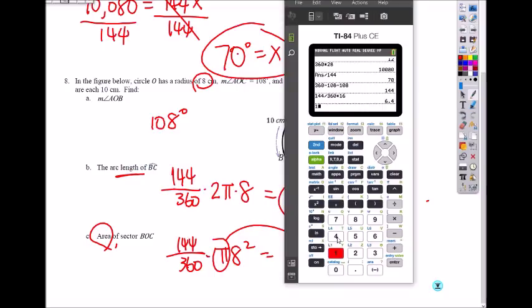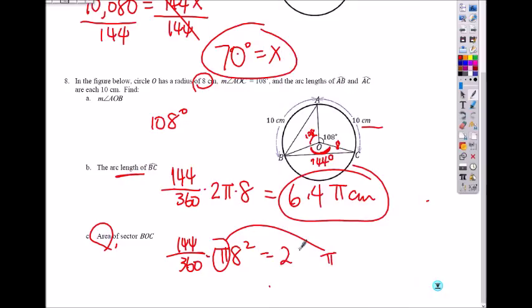It's 144 divided by 360 times 8 squared, which is 64. 8 times 8 is 64, so you get 25.6 pi centimeters squared. So you put it there now.